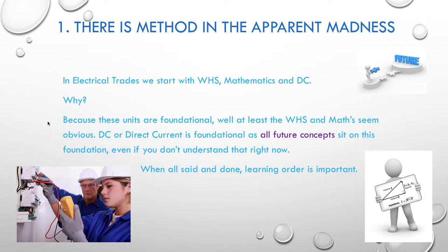When all is said and done, the learning order is important. When you first join the course as a first-year apprentice in electrical trades, you're given a list of all the units you'll do each semester. Their delivery order — within the semester, within the year, and within the whole course — is important. There is method in the apparent madness for why subjects are delivered in a particular order: we're getting underpinning knowledge in place that will be used in future units.